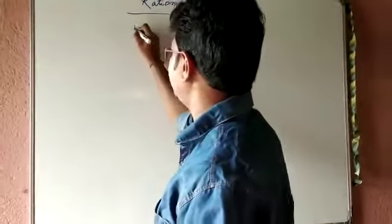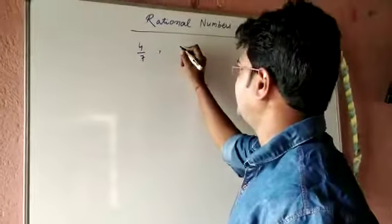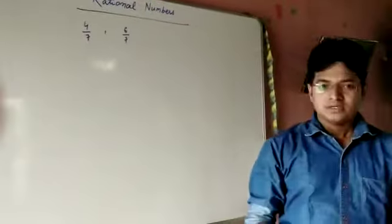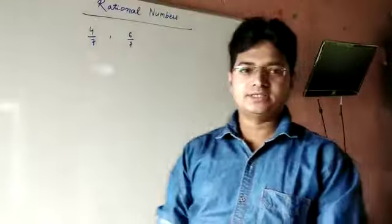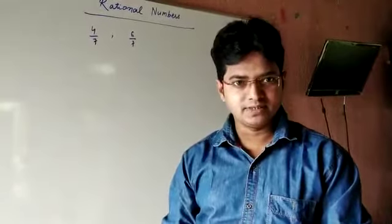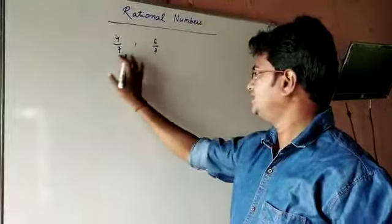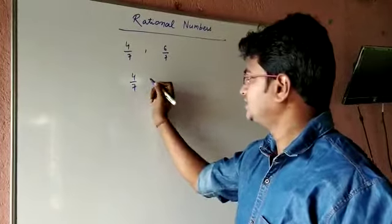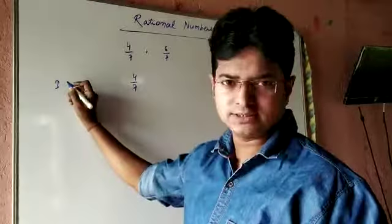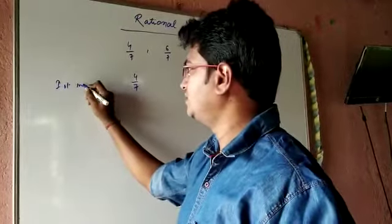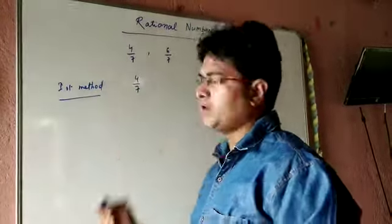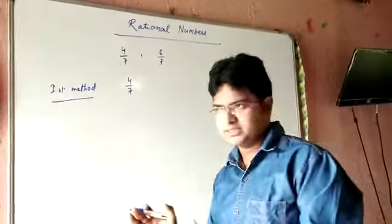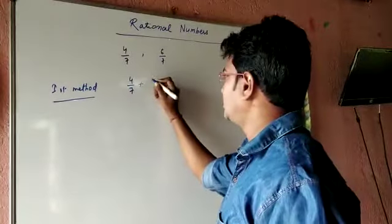Suppose I am taking one example: four by seven and six by seven. I am asking you to insert a rational number between these two numbers. It's very easy because the denominator is the same. There are three methods. The first method: we add the rational numbers and divide by two. By that method, we find out the rational number.